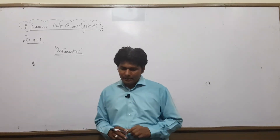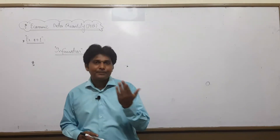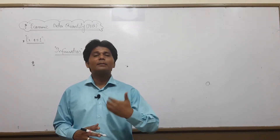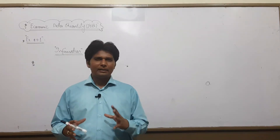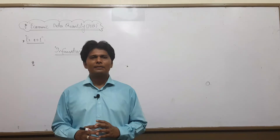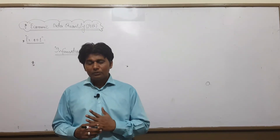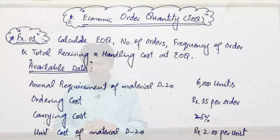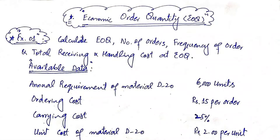Exercise number one for Economic Order Quantity — we will apply the concepts so that we get good practice and the formulas we studied in the last lecture get applied. Exercise number one: Calculate Economic Order Quantity, number of orders, frequency of order, and total receiving and handling cost at EOQ. These are four requirements.